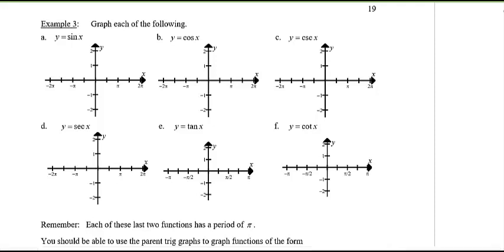Graphing sine: it starts at 0, goes up to 1 at π/2, back to 0 at π, down to negative 1, then back to 2π — that's one cycle. Remember the graph continues and repeats, but one cycle is sufficient.